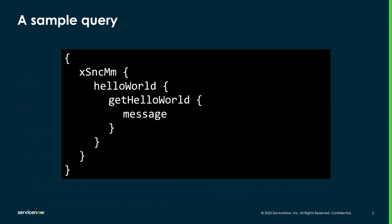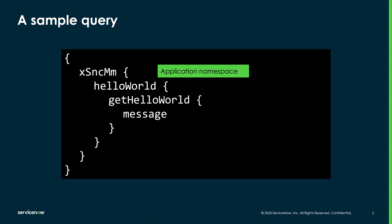Here's a quick example of the basic components of a simple GraphQL query. The first thing to note is that it almost looks like JSON with structured curly brackets, except there's no field-value pairs. This is a query because it doesn't say mutation — in the absence of the query word appearing first, it's assumed to be a query request. Inside the first braces is the application namespace, which is a camel case version of the app scope name — x_snc_mm in this case. Next we have the schema namespace, derived from the API name in much the same way that script includes use the name to create an API name.